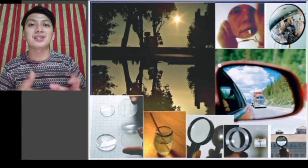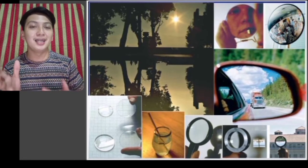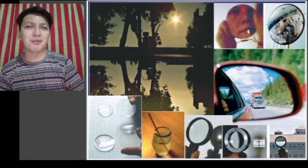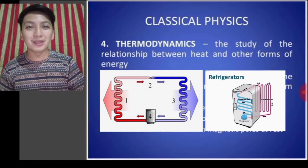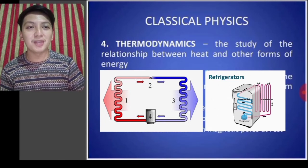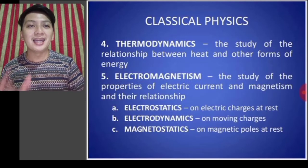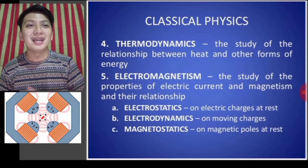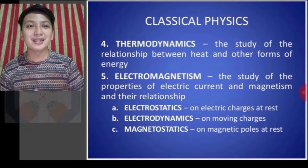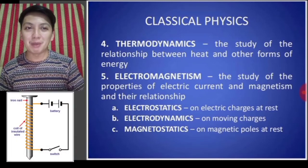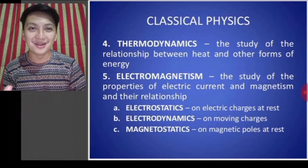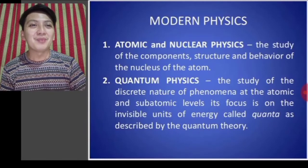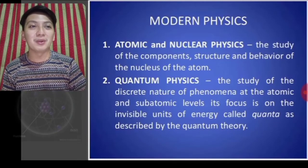Under classical physics we also have thermodynamics, which is the study of the relationship between heat and other forms of energy — 'thermo' meaning heat. Then we have electromagnetism, from the words 'electro' and 'magnetism,' covering the relationship of electric current and magnetism, with properties including electrostatics, electrodynamics, and magnetostatics.